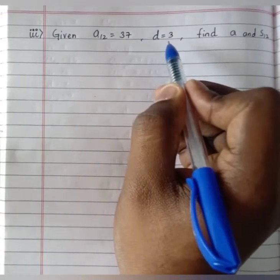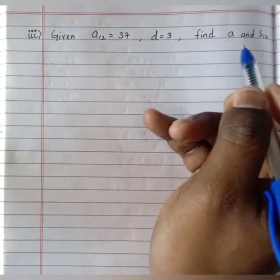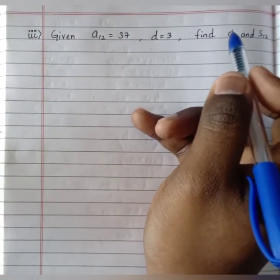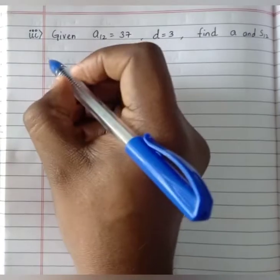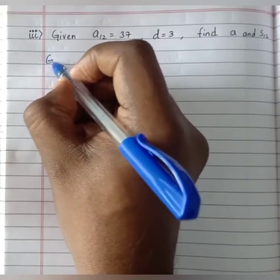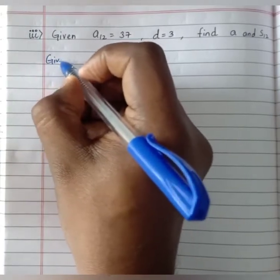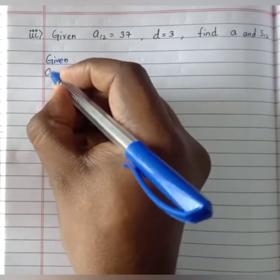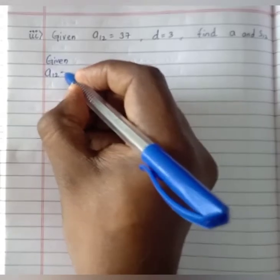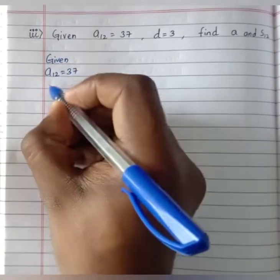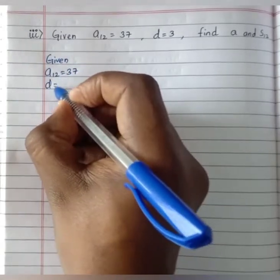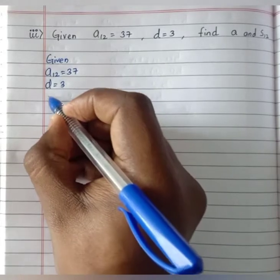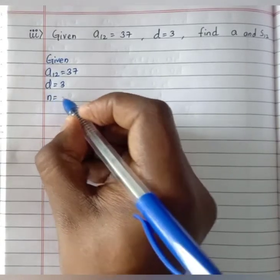Given the 12th term a12 equals 37 and d equals 3, we should find out the value of a and S12. Writing the given data: a12 equals 37, d equals 3, n equals 12.